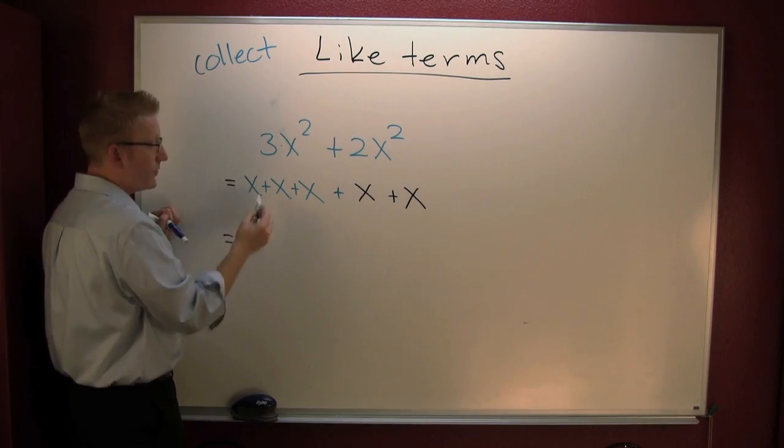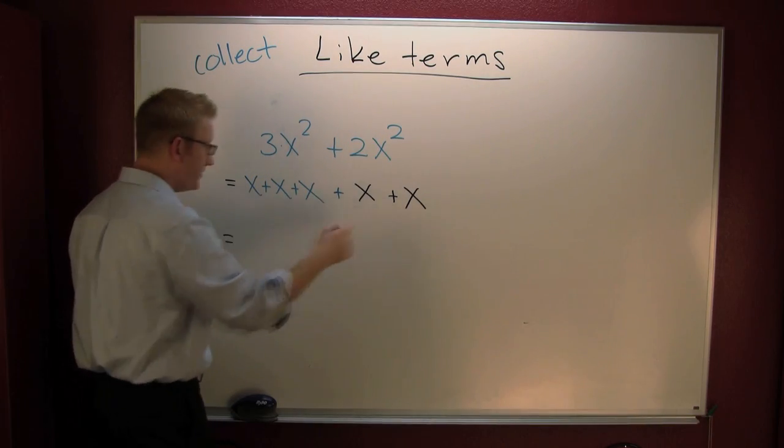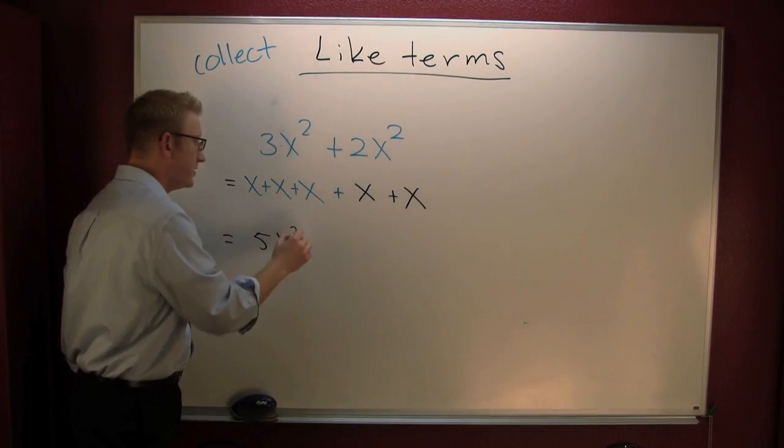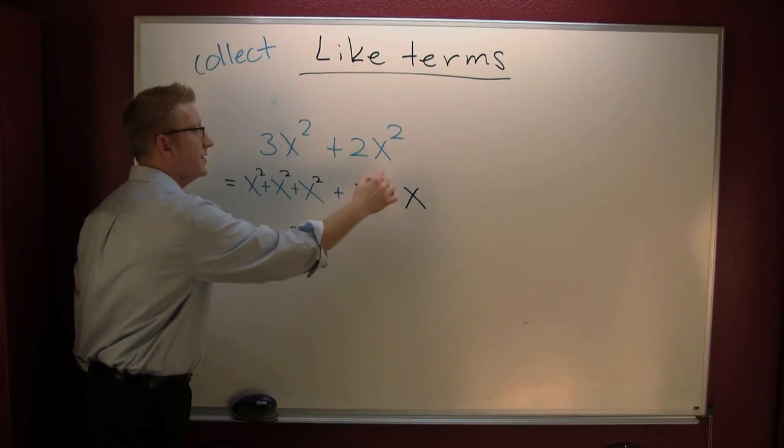If we're going to rewrite that, that would be one, two, three, four, five x's squared. All of these are squares. They're square pairs.